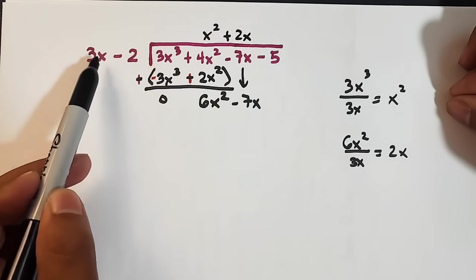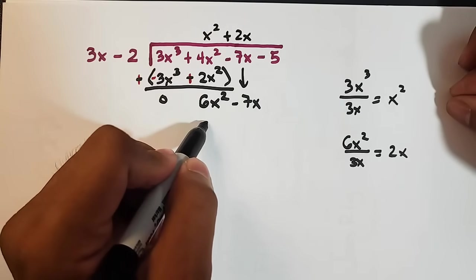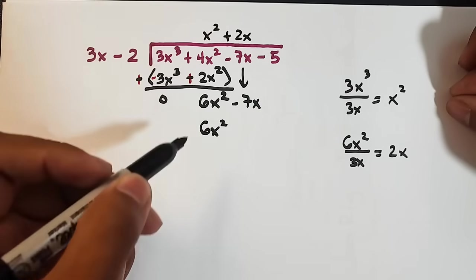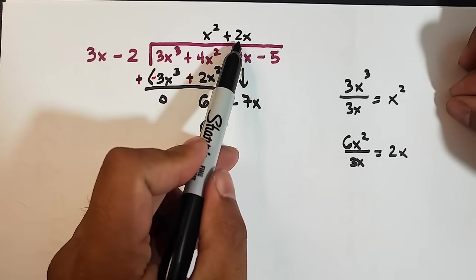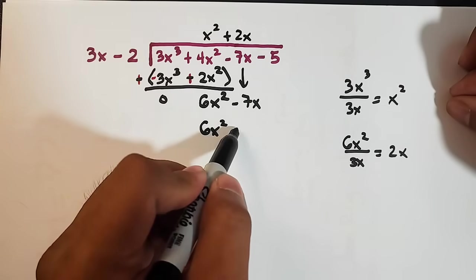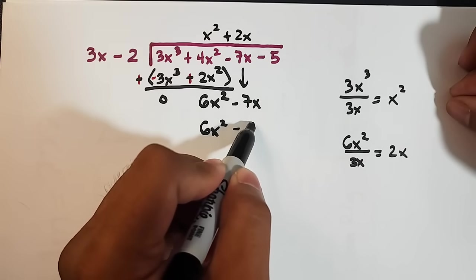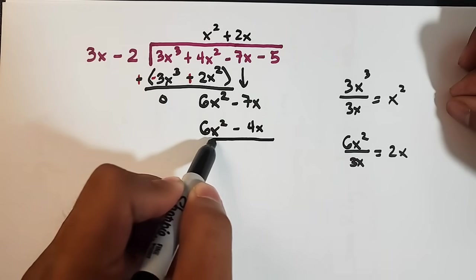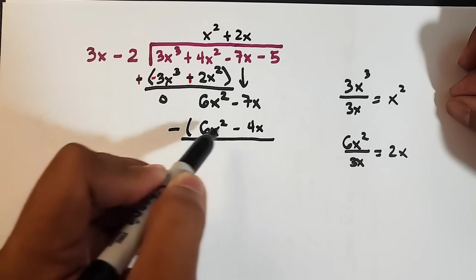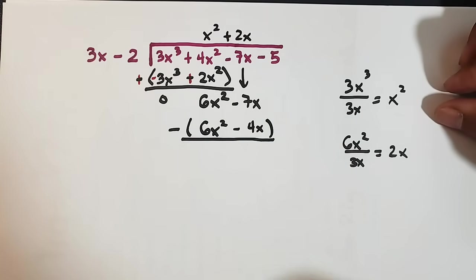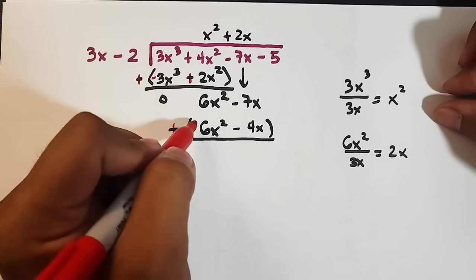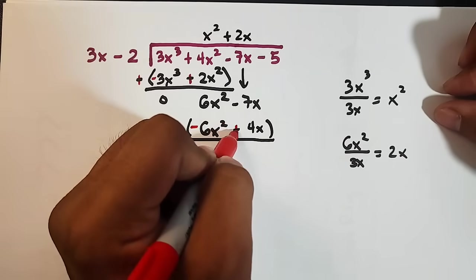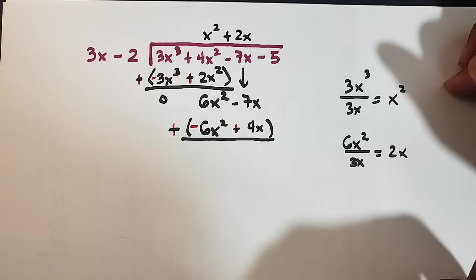Multiply. 2x times 3x is 6x square. 2x times negative 2 is minus 4x. Subtract. Then enclose by parentheses. Change the operation. Plus. This will become negative. This will become positive.